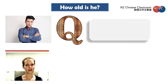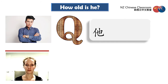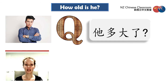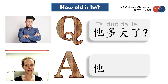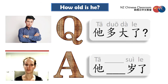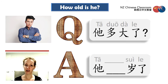So how would we ask 'How old is he?' What's the word for 'he'? 他. And the same as 'how old are you?' — 多大了? So: 他多大了? 你知道吗? For example, if he was maybe 25 — 中文怎么说? 他25岁了.